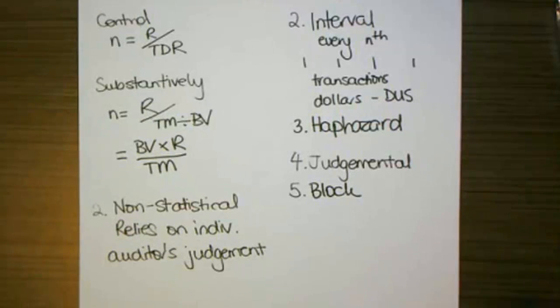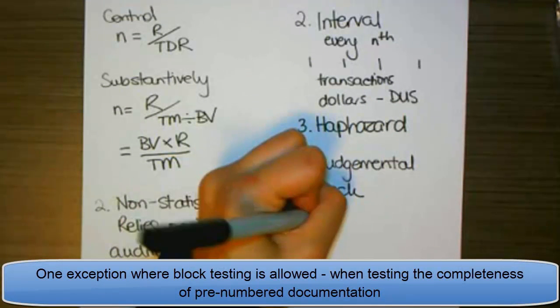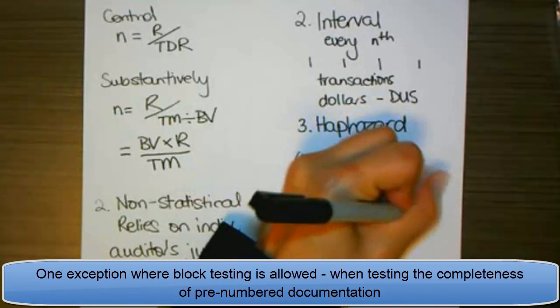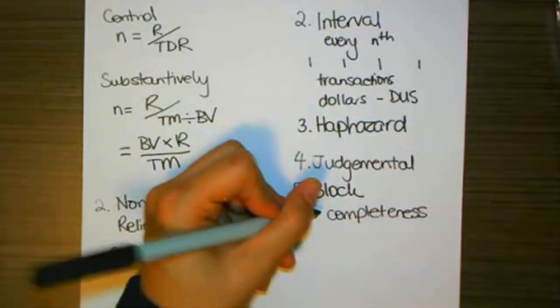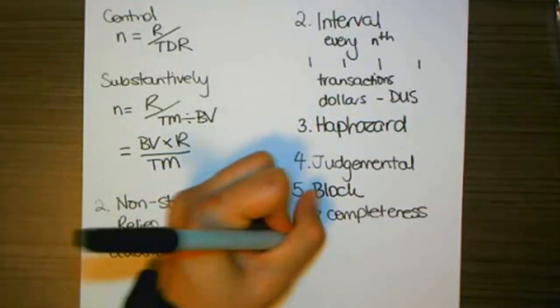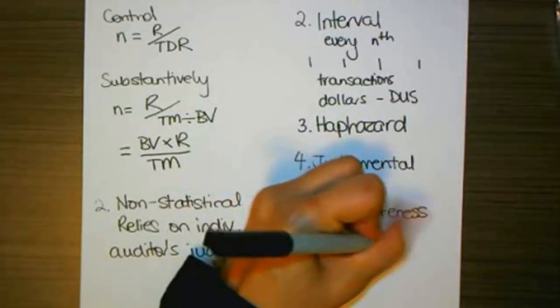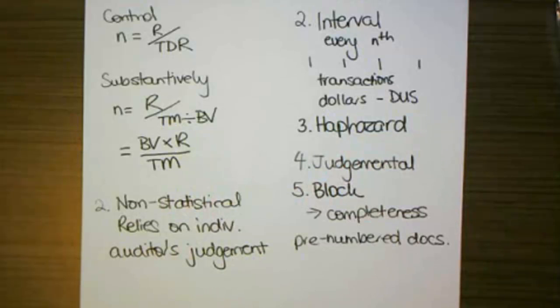But there is one assertion where block comes into its own, and that is completeness. And the reason that we might use block selection is that in order to achieve completeness in many firms, a lot of companies use pre-numbered documents. That could be pre-numbered invoices or purchase orders or requisitions or employee numbers.